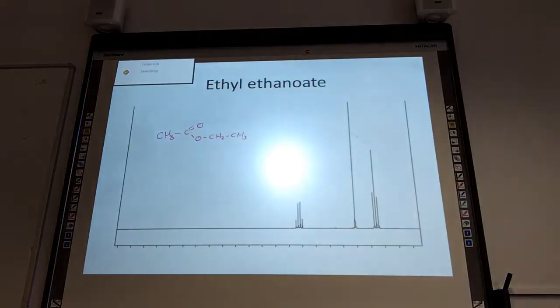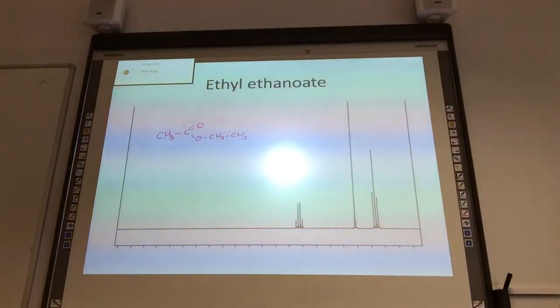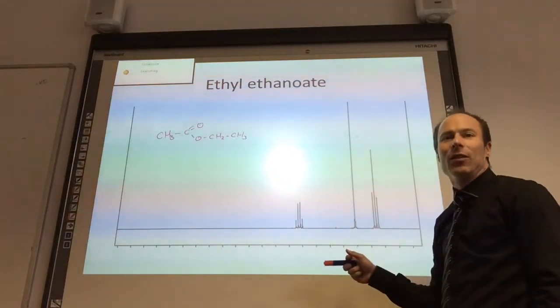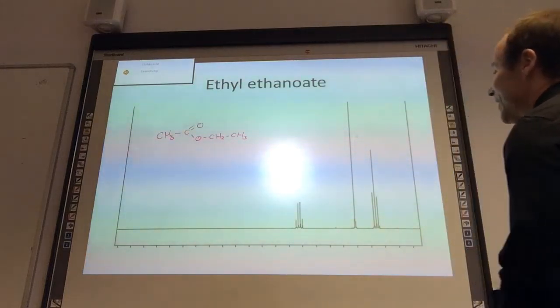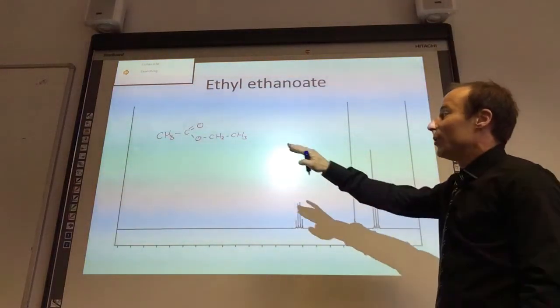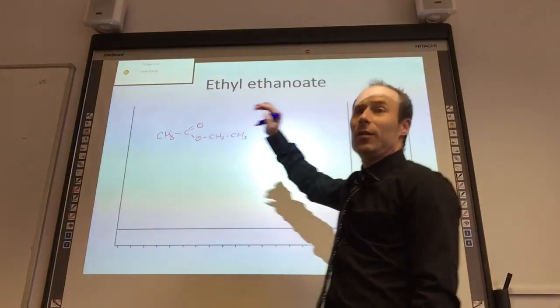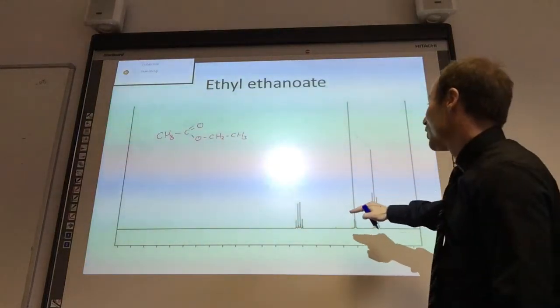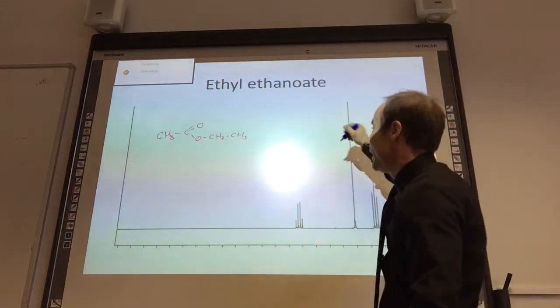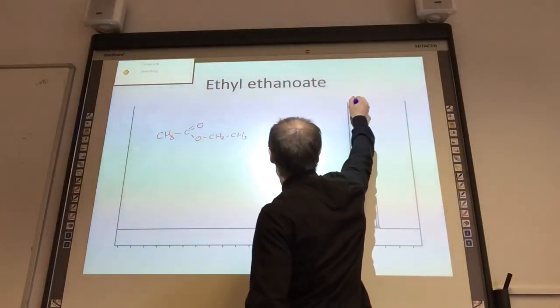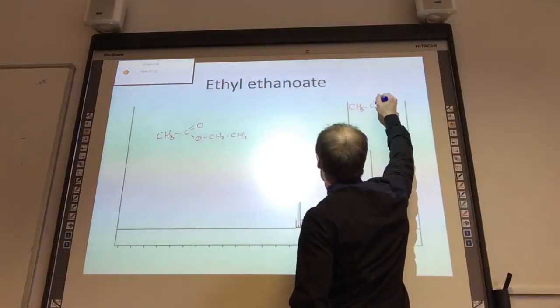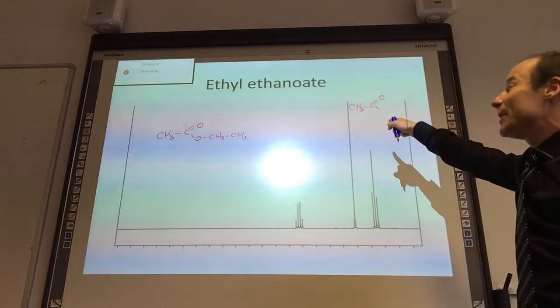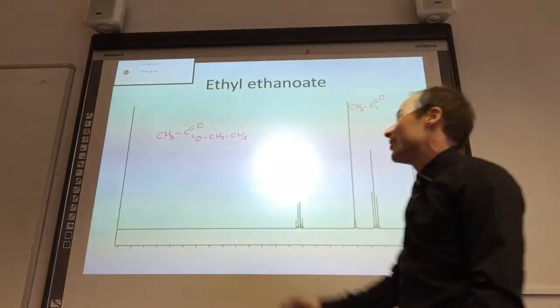So we have here ethyl ethanoate. So again, it should be relatively straightforward. You notice we don't even have a scale - I was that lazy. But we can do it based on what we see. We have got three types of hydrogen, we get three signals as expected. What's this boy going to be? He has got to be the first CH3 because he has no neighbors and is a singlet. So he is a CH3 attached to the C double bond O. I have to be specific because I've got two CH3 groups.